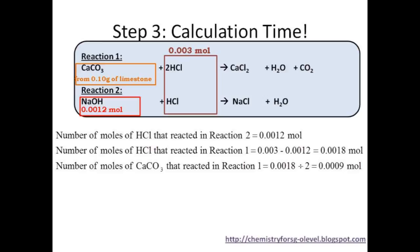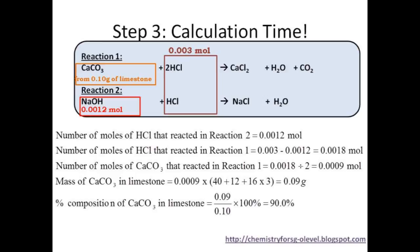Once we know the moles of hydrochloric acid in reaction 1, we know the moles of calcium carbonate used. From the equation, 1 mole of calcium carbonate reacts with 2 moles of hydrochloric acid. So 0.0018 moles of hydrochloric acid reacts with 0.0018 ÷ 2 = 0.0009 moles of calcium carbonate. Since we know the moles of calcium carbonate, we can find its mass: mass = moles × Mr. We find that 0.09 grams of calcium carbonate is present in 0.10 grams of limestone. Therefore, percentage composition = 0.09 ÷ 0.10 × 100% = 90%.